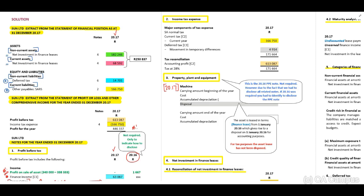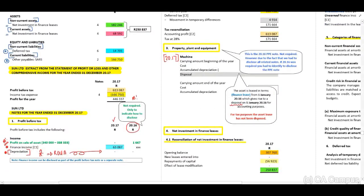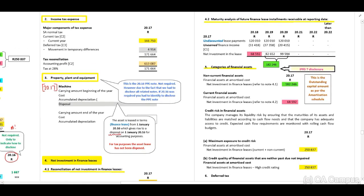Note 4 covers the net investment in finance leases. You need to include a reconciliation with opening balance, new leases entered into, repayments of capital, any lease modifications, and closing balance. The maturity analysis of future finance lease installments receivable requires you to include your undiscounted lease payments of R120,010 minus unearned finance income. This is a requirement per IFRS 16 that you need to know.